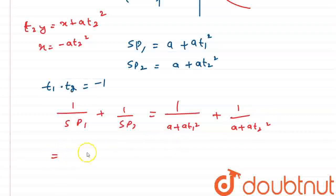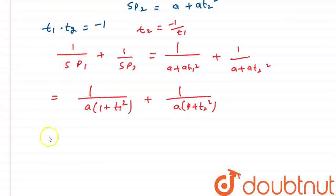If I take a common, it will give me 1 upon a into 1 plus t1 square plus 1 upon a into 1 plus t2 square. Now, using this rule, I can write t2 is equal to minus 1 upon t1. I can replace t2 by t1, so it will give me 1 upon a into 1 plus t1 square plus 1 upon a into 1 plus 1 by t1 square. So, minus will become positive because of square.